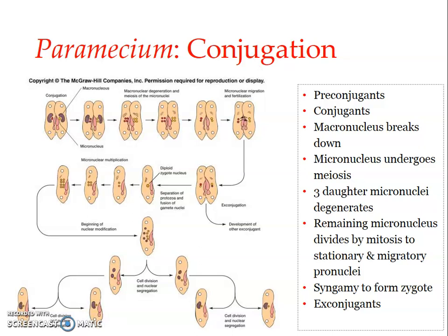Conjugation is a temporary union of two individuals of the same species for the purpose of exchanging a part of their genetic material. Specifically, it is the micronuclear material that is exchanged. Even though paramecium possesses two nuclei — a macronucleus and a micronucleus — it is the micronucleus which is involved in the conjugation process, and this micronuclear material is exchanged between the conjugates.